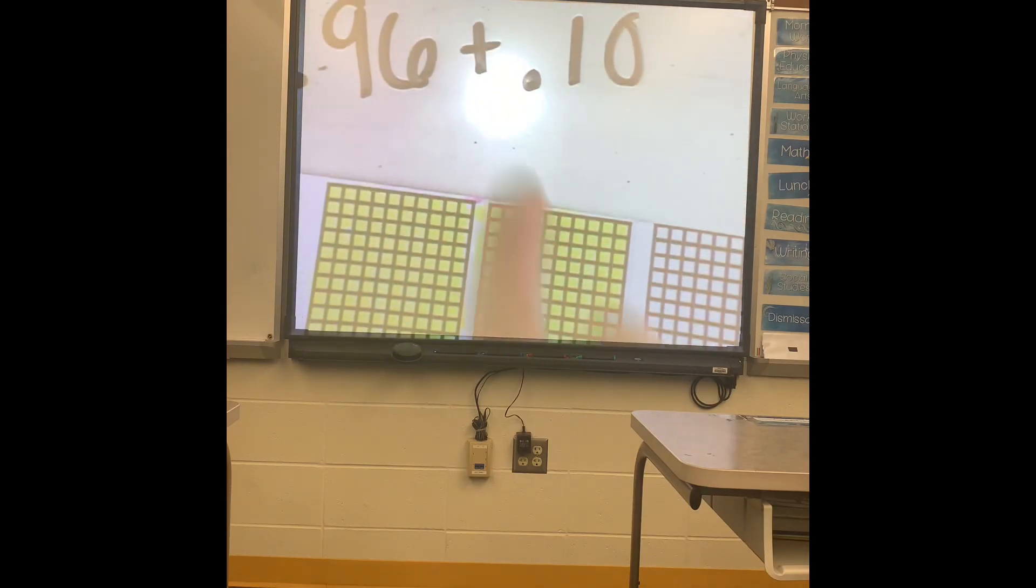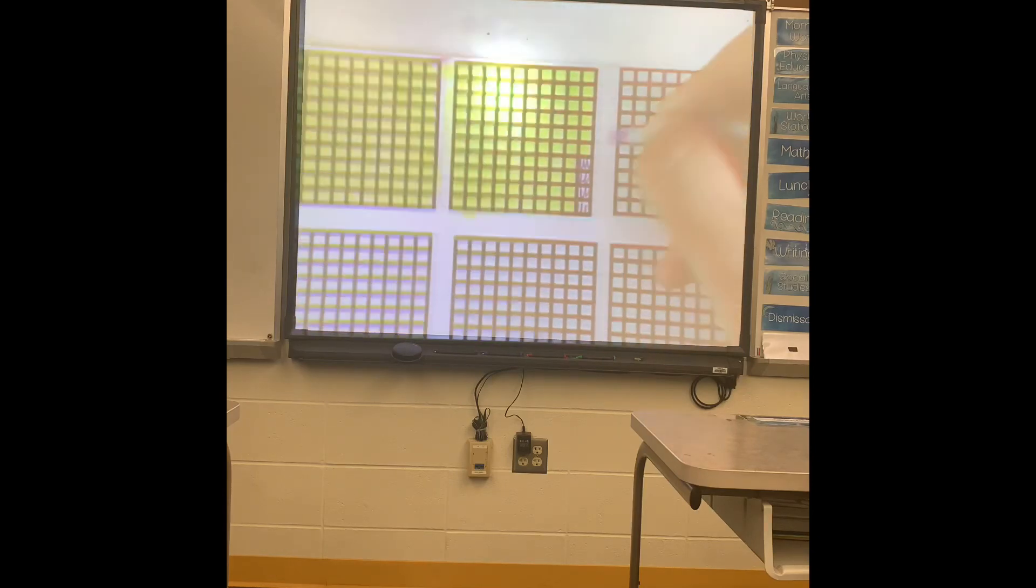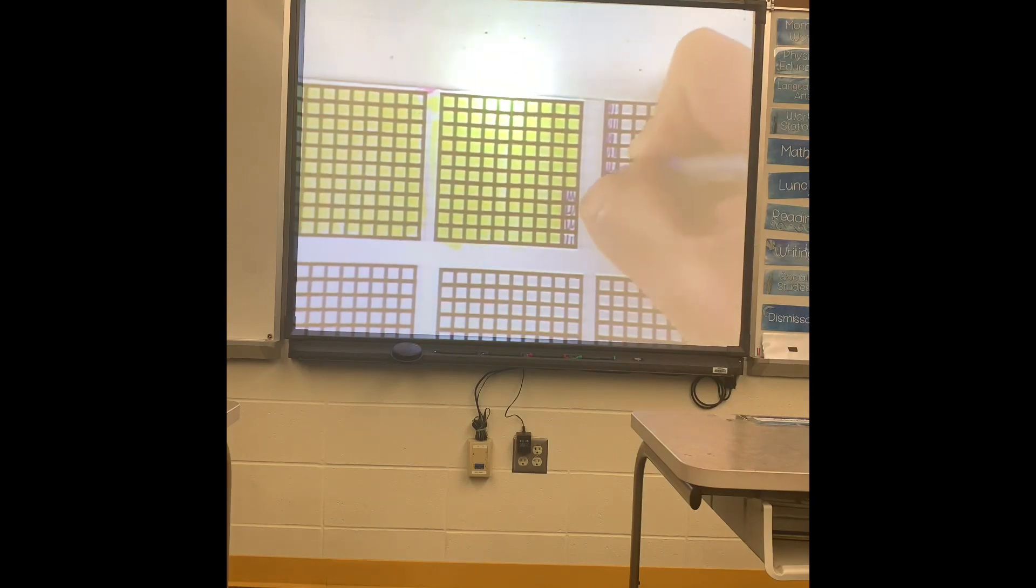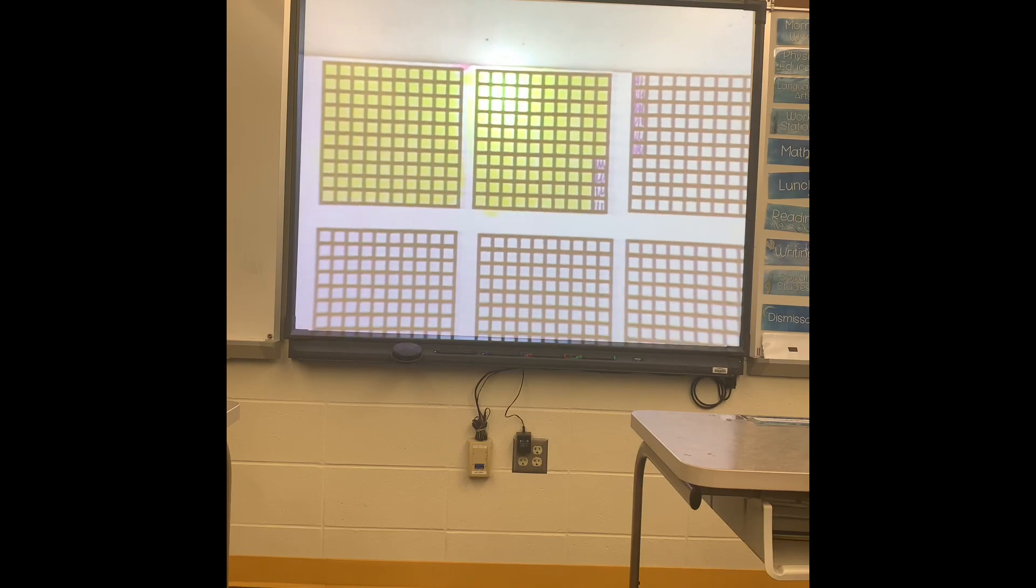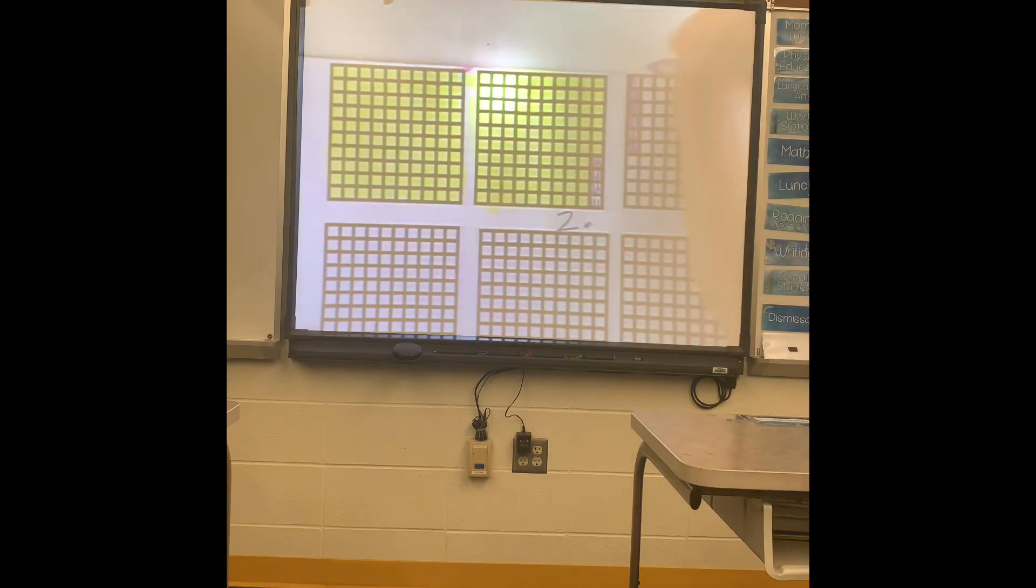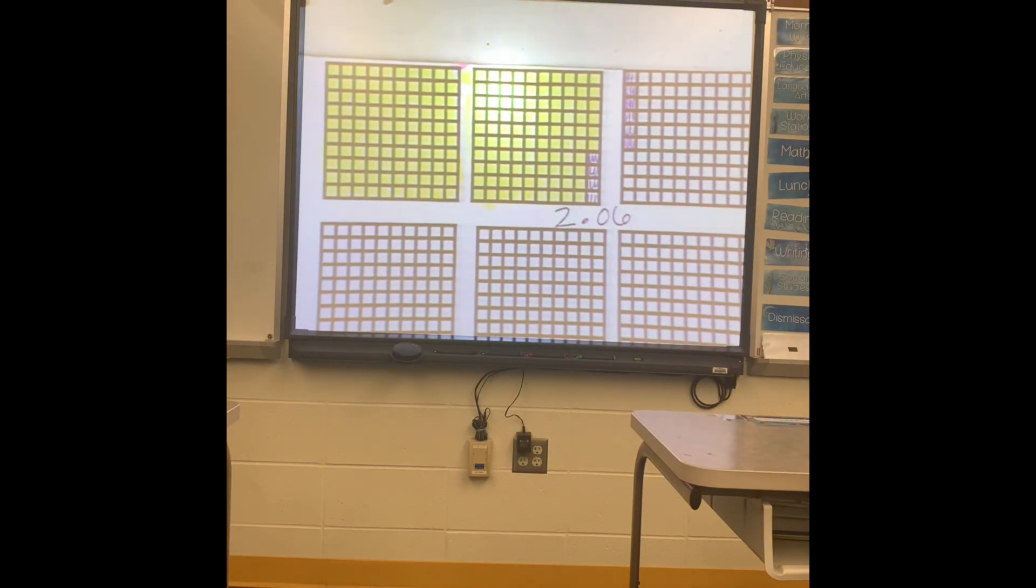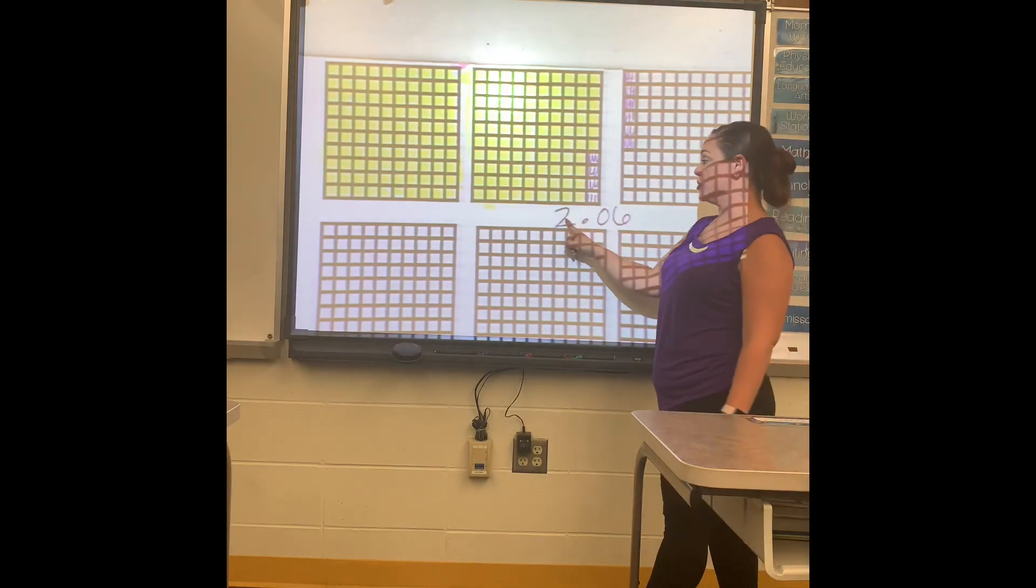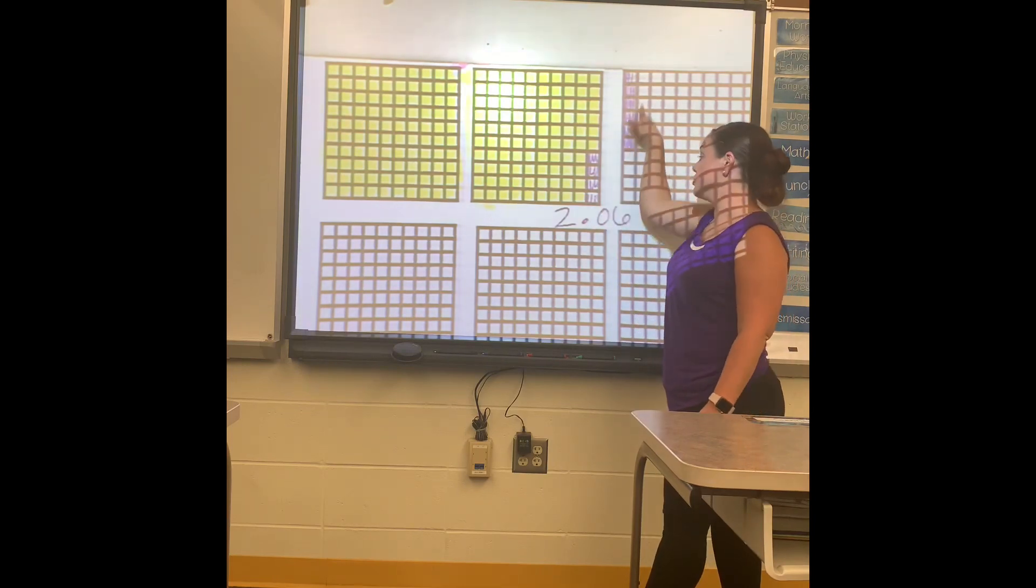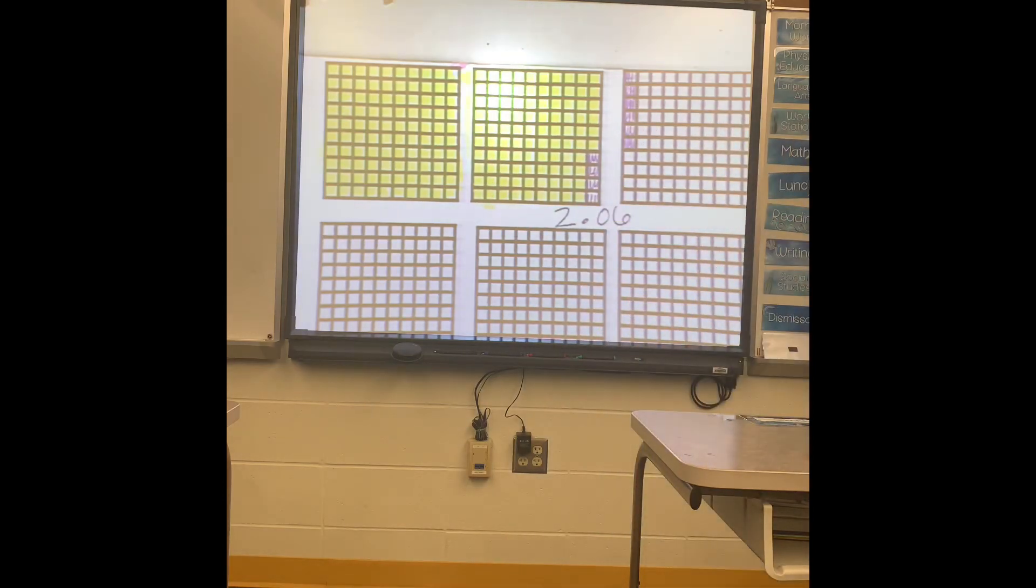But now I need to add my ten. So one, two, three, four, five, six, seven, eight, nine, ten. Now look—now you have two full boxes and then one, two, three, four, five, six. Six squares. A lot of the students are going to want to put 2.6, but that represents sixty. You don't have sixty, you only have six. I like to think of money, you guys. Two dollars and six cents.